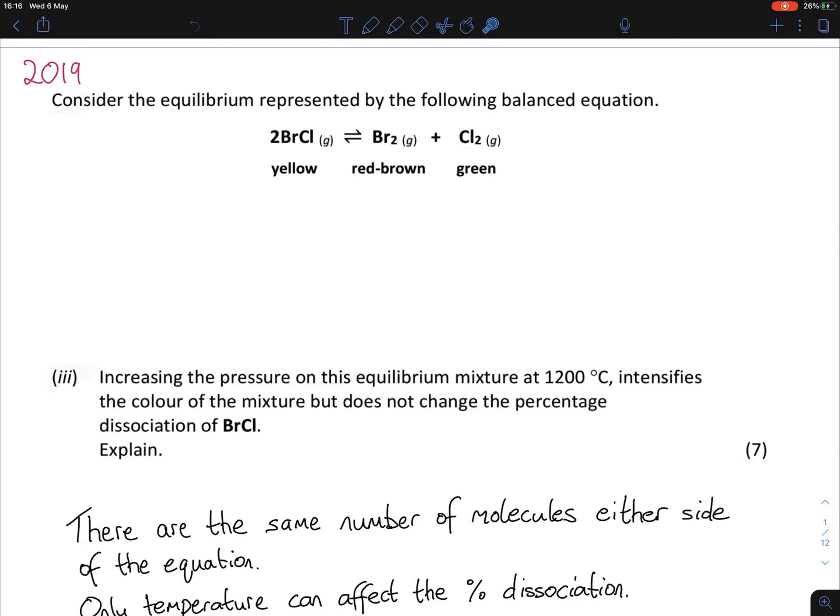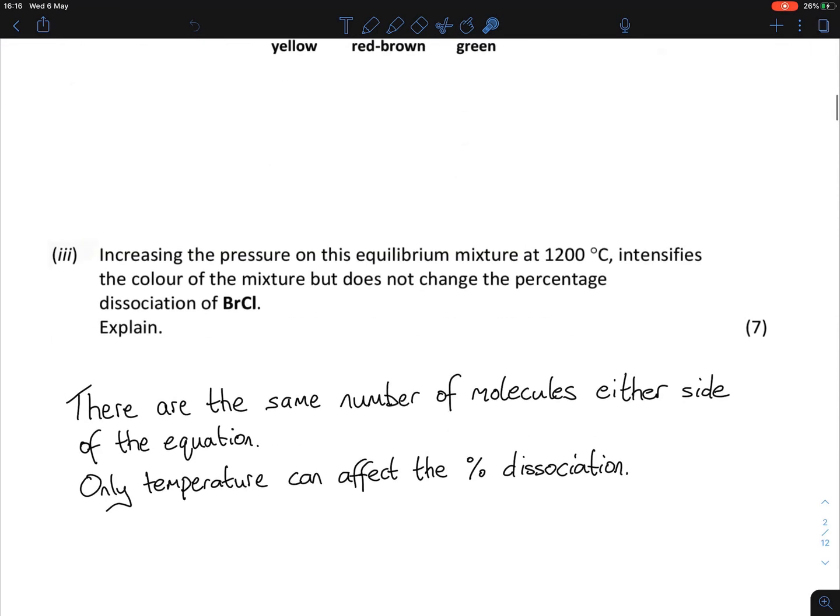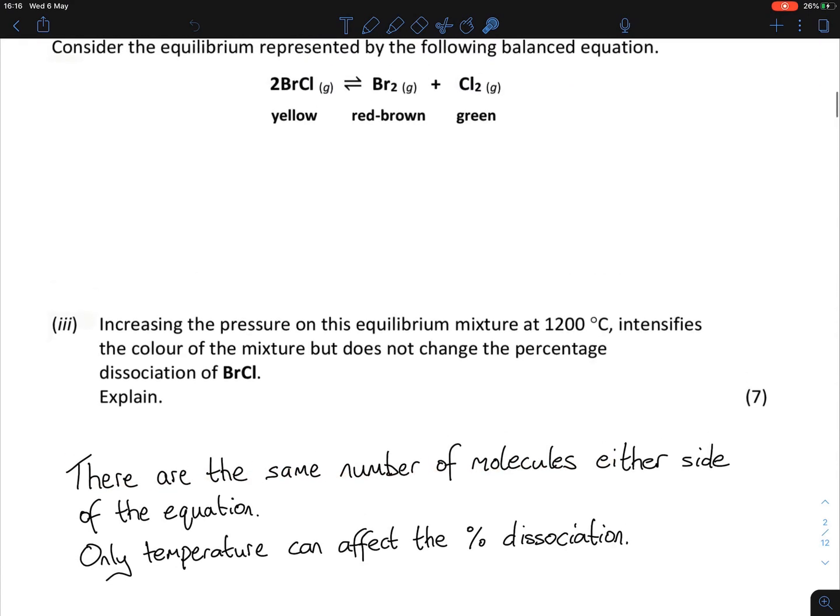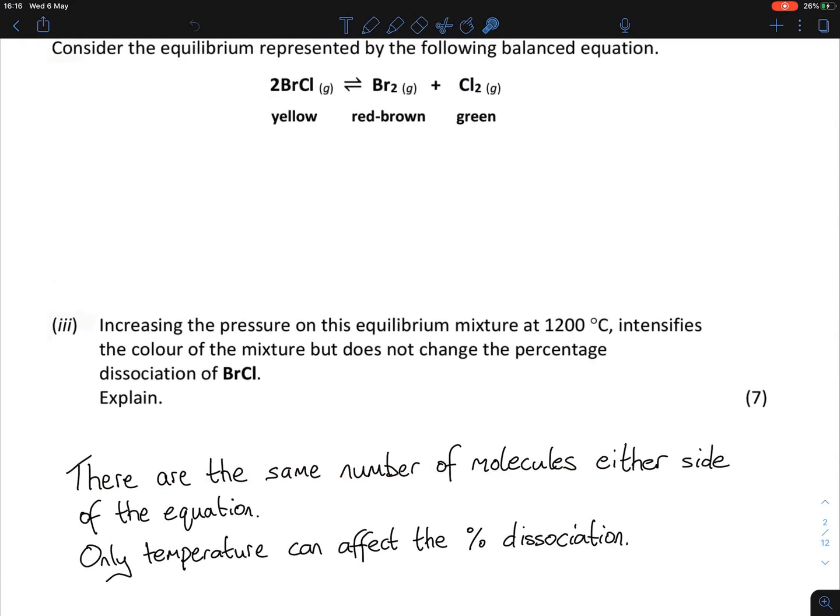This is the BrCl dissociating into bromine and chlorine. It is intensifying the color but doesn't change the percentage dissociation. There are the same number of molecules either side of the equation - two here and one plus one here, so two either side. Only temperature can affect the percentage dissociation, the Kc value.